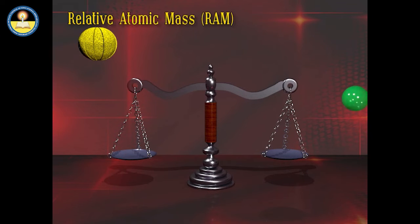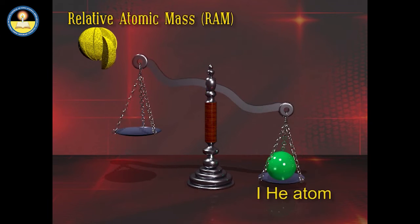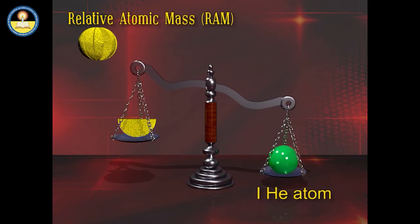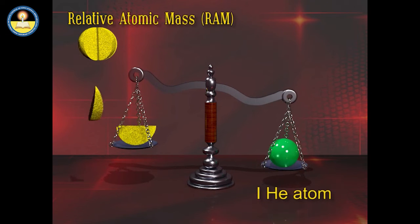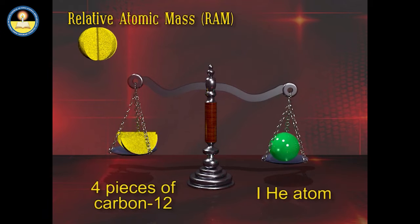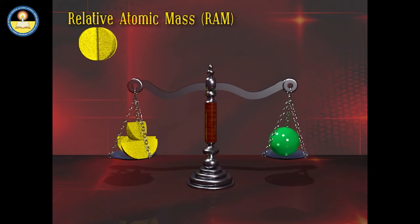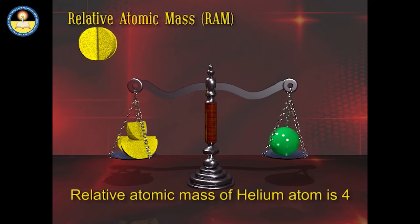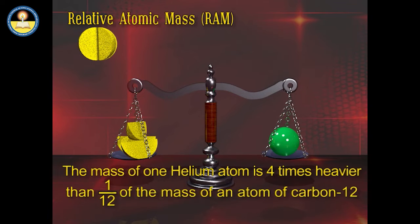We take a beam balance and place an atom of helium on one side. In order to balance it, we place 4 parts — 1/12 pieces of carbon atom. We know that the Relative Atomic Mass of a helium atom is 4. Therefore, the mass of one atom of helium is 4 times heavier than 1/12 times the mass of an atom of carbon-12, taken as standard.